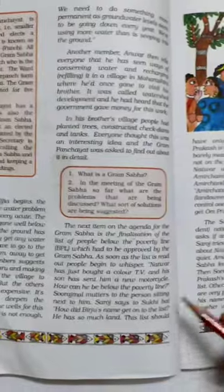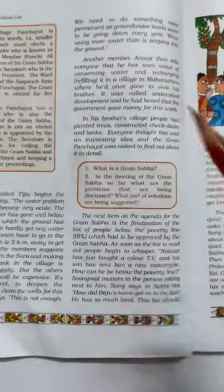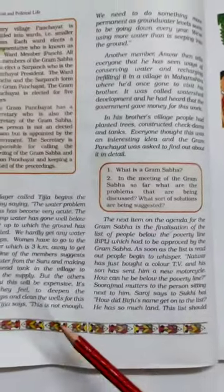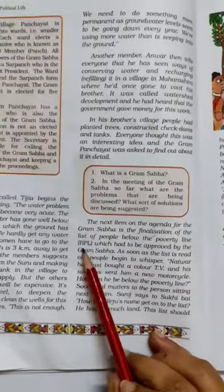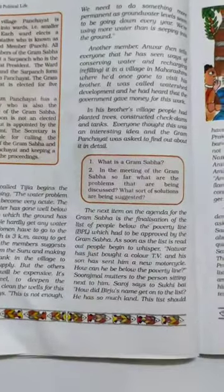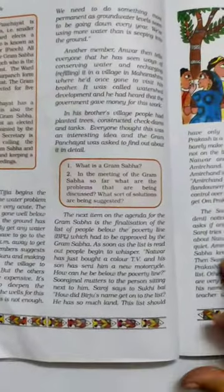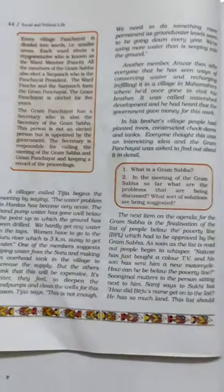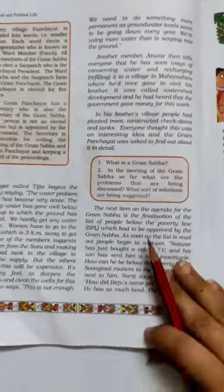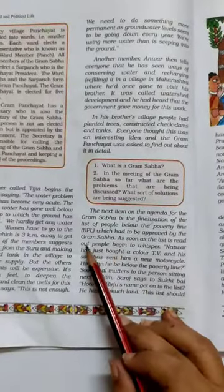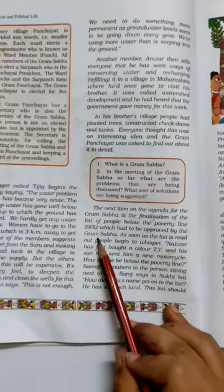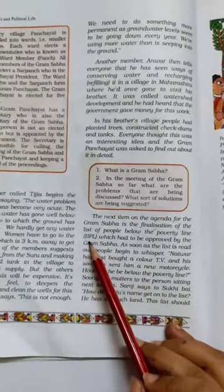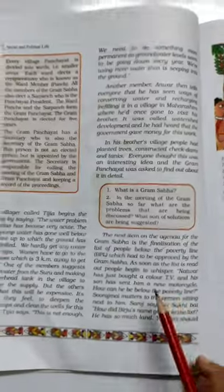हमारी government कहती है, जिन लोगों की सालाना आमदनी एक लाख अस्सी हजार से कम है — जो एक पूरे साल में एक लाख अस्सी हजार या उससे कम कमाते हैं — उन्हें कहा जाता है below poverty line। वो गरीबी की रेखा से भी नीचे हैं, वो गरीबों से भी ज़्यादा गरीब हैं। पूरे गाँव के लोगों में से कौन-कौन ऐसे लोग हैं जो below poverty line के हैं, उनके बारे में list तैयार करनी है।